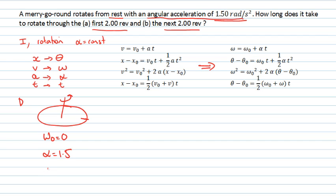And what we want to find out is the time it takes to first of all travel two revolutions. Remembering one revolution is one complete movement of the marker all the way around, that's equal to an angular displacement. So θ minus θ₀, the total amount of angle that's been traversed by the merry-go-round, is equal to two revolutions for part A.